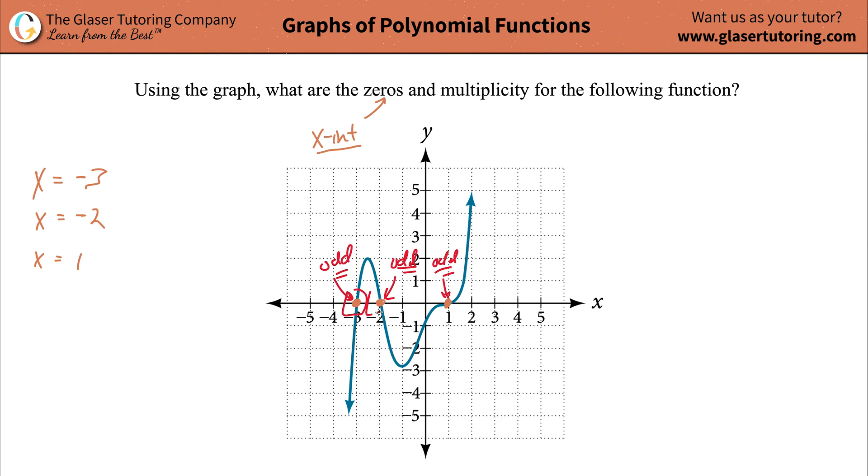So how do we now determine the value? Because there's a whole lot of odd numbers out there: one, three, five, seven, et cetera. Well, when the graph crosses that x-axis and it almost looks linear, like it doesn't snake, it's the lowest odd number you know. So one, the number is going to be one. The multiplicity will be one. So for the zero at negative three, the multiplicity is one. The zero at negative two, the multiplicity is one.